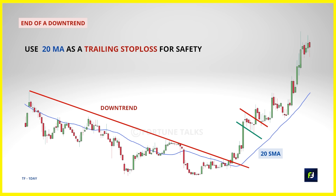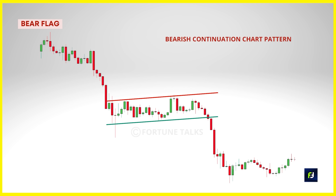A bear flag pattern is just the opposite of a bull flag. It's another continuation chart pattern, but the bear flag signals that the market is likely to move lower. If you understand everything about trading a bull flag, trading a bear flag is just a walk in the park — you just flip everything at 180 degrees. To identify a bear flag: first look for a strong trending move lower, where the range of candles is more bearish than usual and they tend to close near the lows.